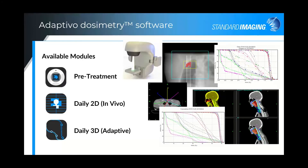Before that, a little background about Adaptivo. There are three available modules. A pre-treatment module, which is useful for cases where you want measurements using your integrated EPID panel for pre-treatment QA — an in-air measurement compared to the predicted image from the RT plan. The second module, the in vivo module, will be the focus of the rest of the webinar. It is very similar to the pre-treatment module, with the exception that the patient anatomy and couch are in the beam.